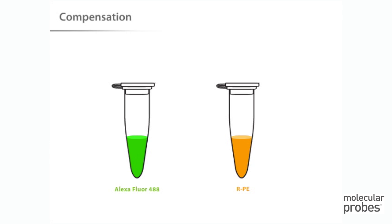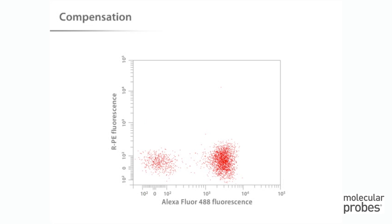In order to see the amount of compensation required to correct the fluorescence, we need single color samples — either aliquots of the cell sample stained with each fluorophore separately, or microspheres that capture an individual reagent. Starting with the Alexa Fluor 488 stain, what you want to see is a population with bright fluorescence in the Alexa Fluor 488 channel. However, these same cells also emit fluorescence into the RPE channel, which results in an apparent upward shift of this population.